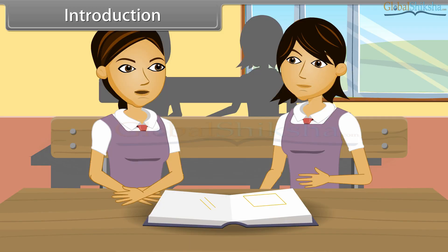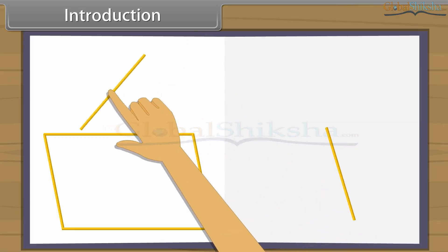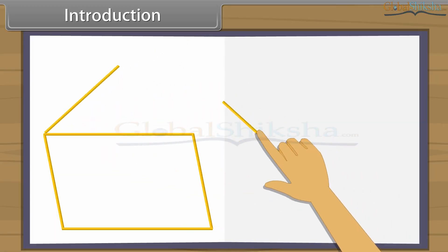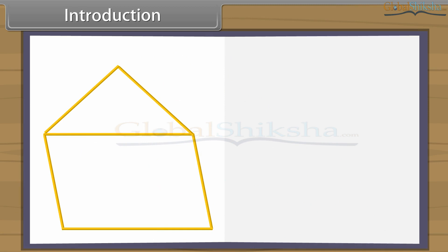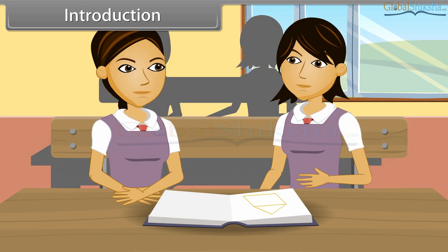This is good. Can you now make a triangle? I can make, but I am left with only two sticks now. No problem, you can still make a triangle. But how? Give me the sticks. See, now both the shapes have the same base. This was so easy. Come, I will tell you more about such figures.